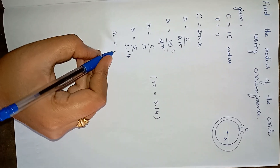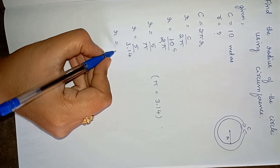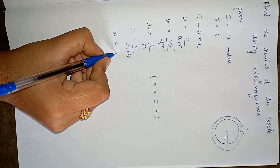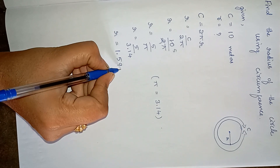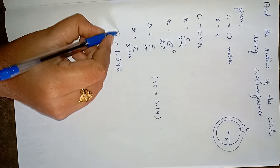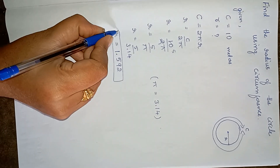After dividing, R is equal to 1.592. So the radius of the circle is 1.592.